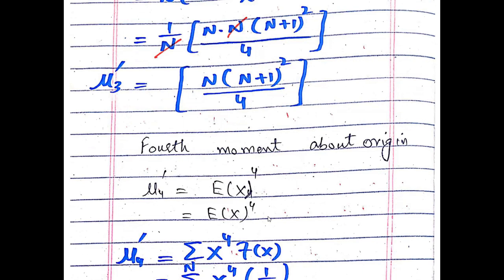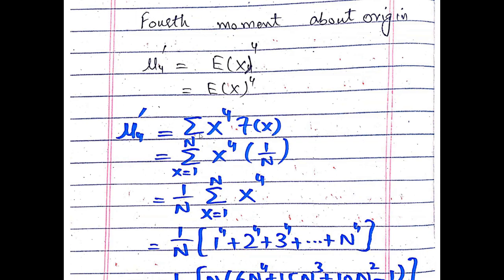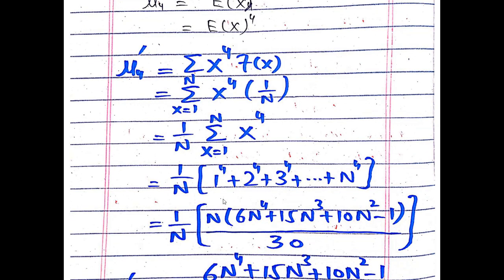The fourth moment about the origin, μ₄', is equal to E(X⁴). So μ₄' equals the summation of x⁴·f(x), which gives (1/N)·x⁴ with x ranging from 1 to N. Expanding: (1/N)·(1⁴ + 2⁴ + 3⁴ + … + N⁴).